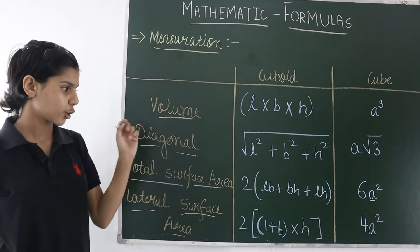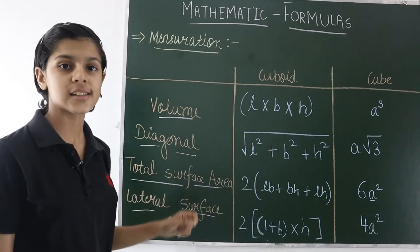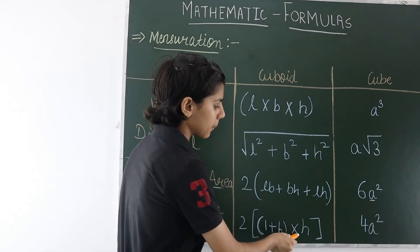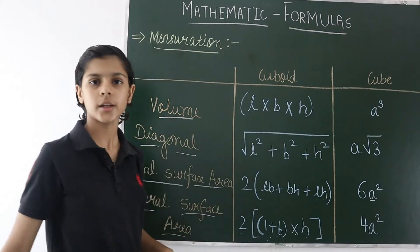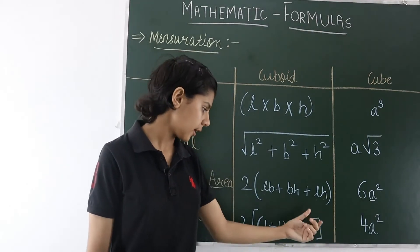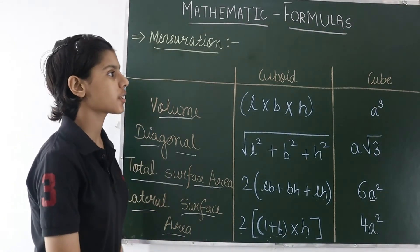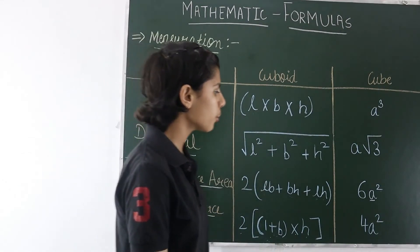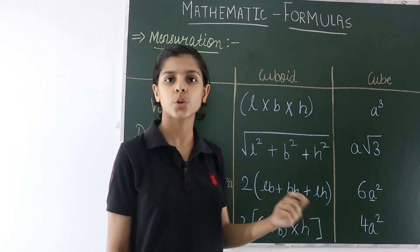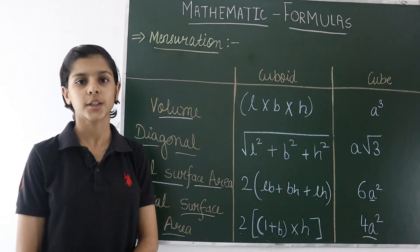For the lateral surface area of a cuboid, the formula is 2 into (L plus B) into H. First we add length and breadth, then multiply by height, and then multiply the whole product by 2. For the lateral surface area of a cube, the formula is 4A squared — the side of the cube is squared and multiplied by 4.